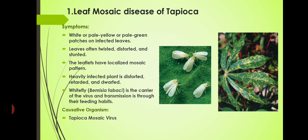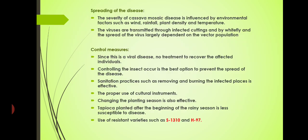The causative organism is tapioca mosaic virus. Bemisia tabaci is only a carrier, not the causative organism. The spreading of the disease — the severity of cassava mosaic disease — is influenced by environmental factors such as wind, rainfall, plant density and temperature. If a field has a congested mass of plants, then the severity is more. The viruses are also transmitted through infected cuttings, and the spread of the virus largely depends on the vector population.